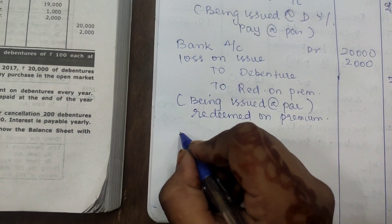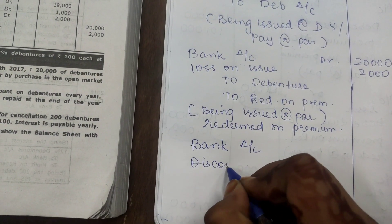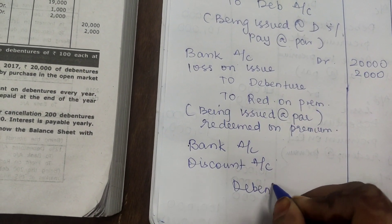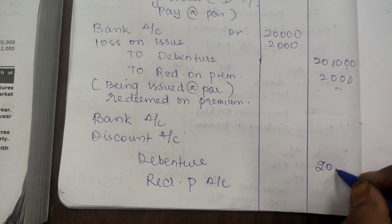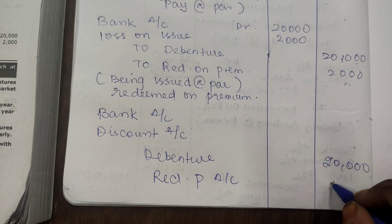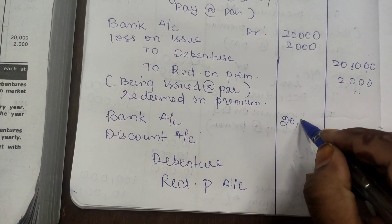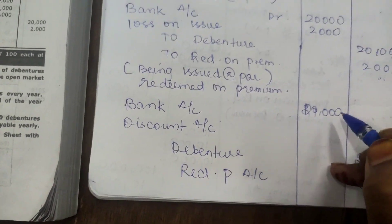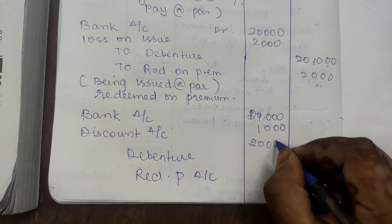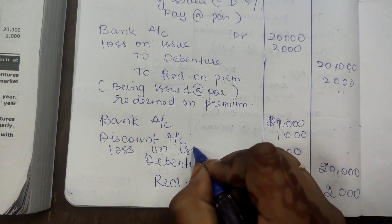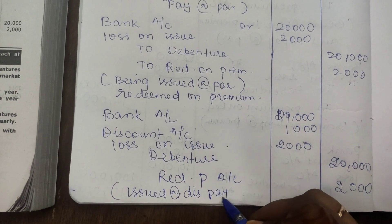Last entry — issued at discount and redeemable at premium: Bank Account Dr., Discount on Issue of Debenture Account Dr. to Debenture Account, and Debenture Account Dr. to Bank Account and Premium on Redemption Account. Debenture value is 20,000; we received 19,000 after 5% discount of 1,000. While repaying, we pay 22,000 at 10% premium. So the total loss on issue is 20,000 plus 1,000 = 21,000.